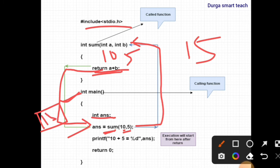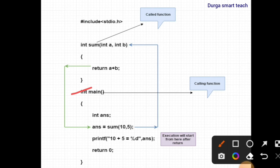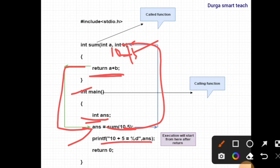Now ans contains 15. printf '10 plus 5 is equals to %d', ans — so the value in ans is 15, so 15 will be displayed. At first the main function is executed. In main function it has the ans variable and we are calling to the sum function and passing parameters 10 and 5. By using return we are adding these two variables and returning to the calling function, and we are printing the value stored in ans.